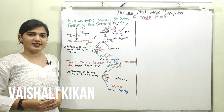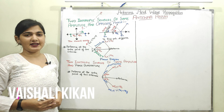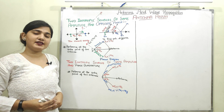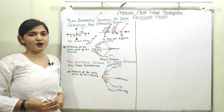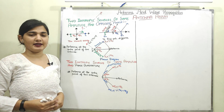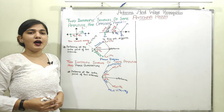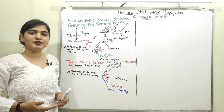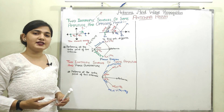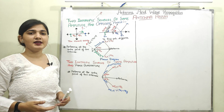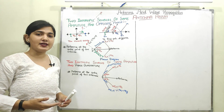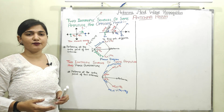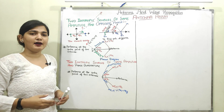Welcome to this video lecture series on Antenna and Wave Propagation. In this video, we will discuss the next two cases of two-point antenna array. In my previous video, I took the case of two isotropic point sources of same amplitude and same phase with two cases: the reference was at center and the reference was at one of the antennas.